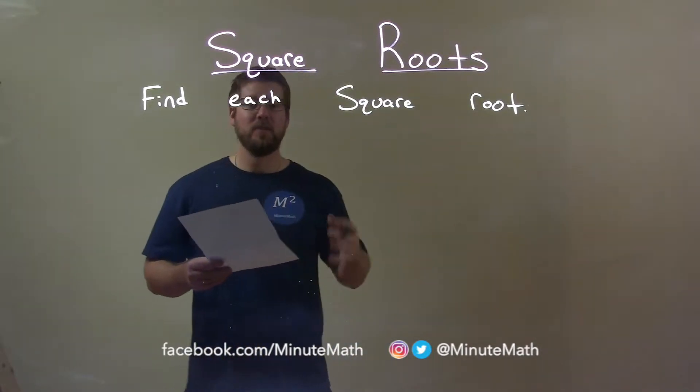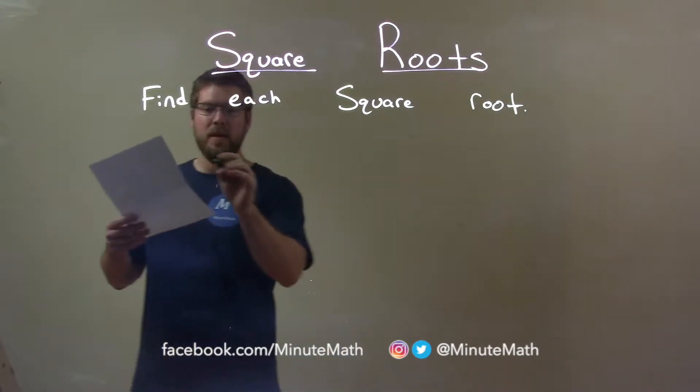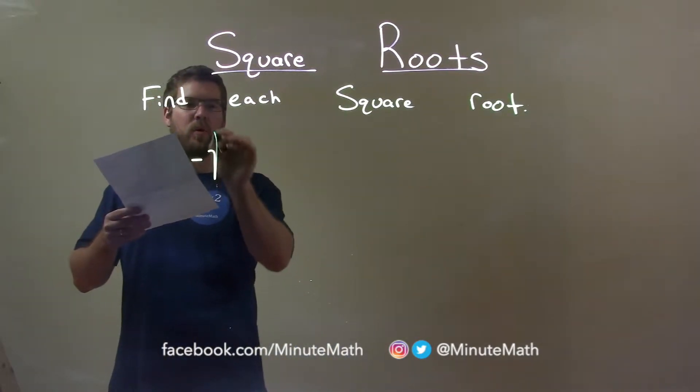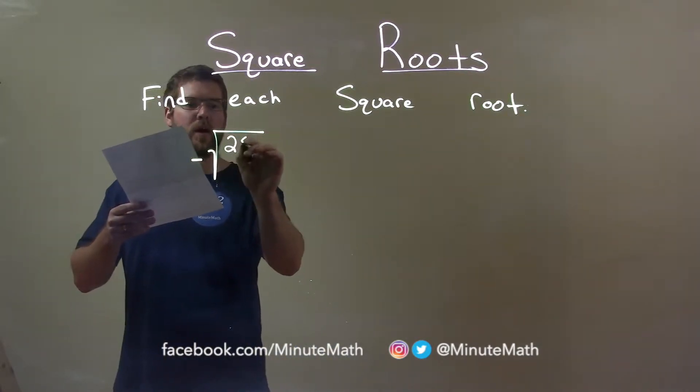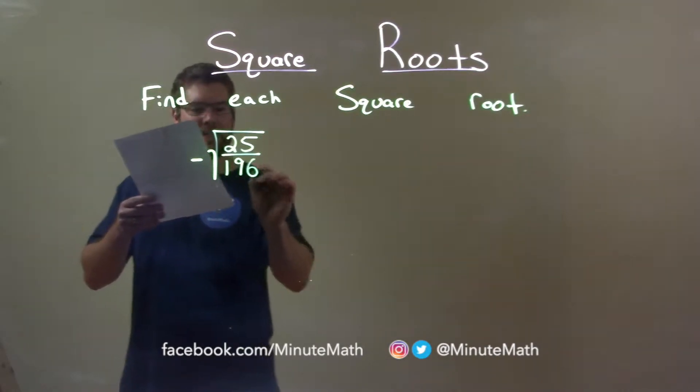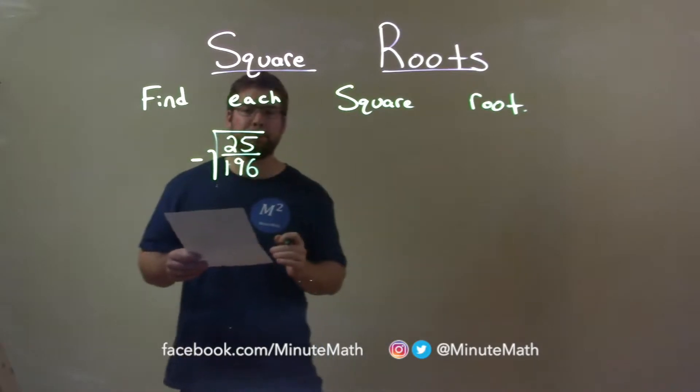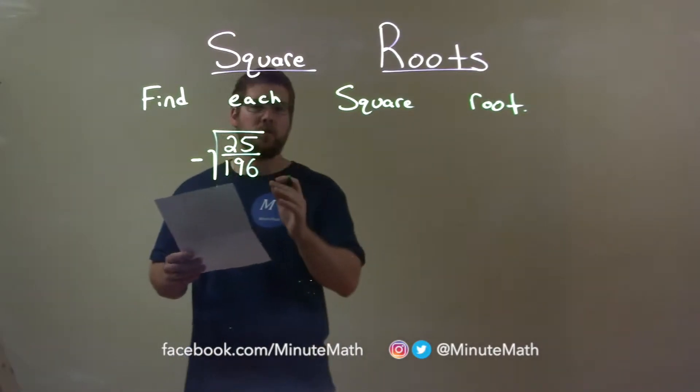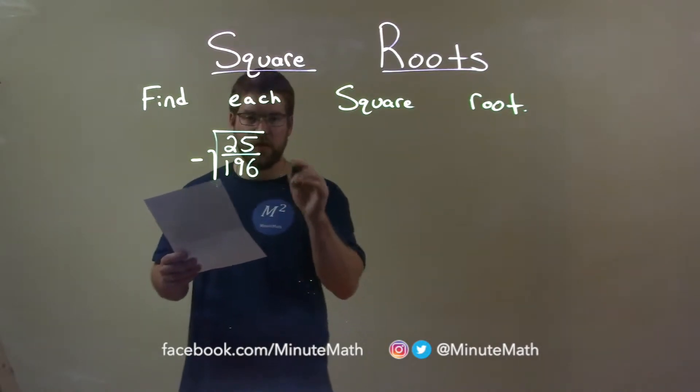So, if I was given this problem, a negative square root of 25 over 196, what we know with square roots, with fractions, we can take the square root of the numerator and denominator individually.